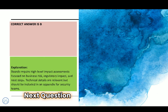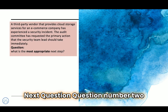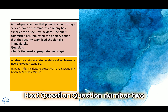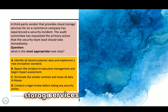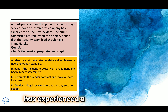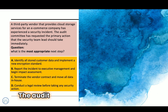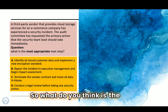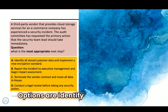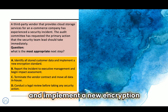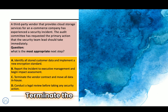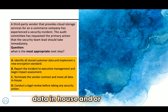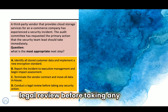Question number two. A third-party vendor that provides cloud storage services for an e-commerce company has experienced a security incident. The audit committee has requested the primary action the security team lead should take immediately. What is the most appropriate next step? Options: A) identify all stored customer data and implement a new encryption standard; B) report the incident to executive management and begin impact assessment; C) terminate the vendor contract and move all data in-house; or D) conduct a legal review before taking any security action.